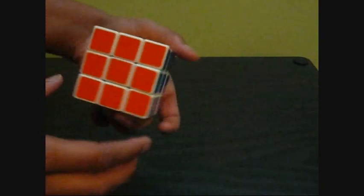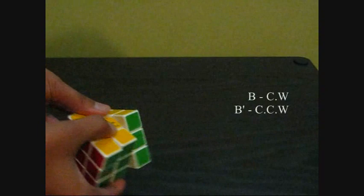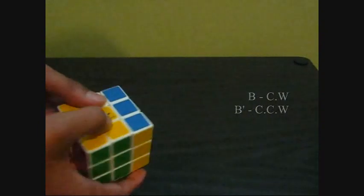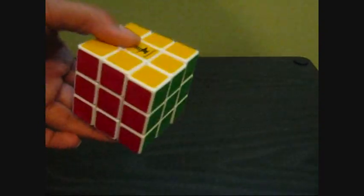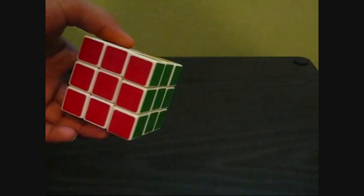Back, B, clockwise. B prime, counterclockwise. Very simple and very important if you're new at Rubik's Cube and learning how to solve it.